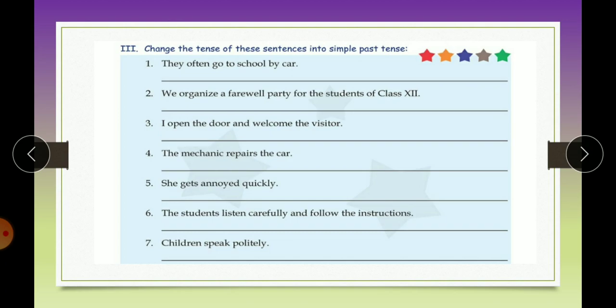Third exercise, change the tense of these sentences into simple past tense. So how are you supposed to do this? Very first step, read the sentence. Second step, find out the verb. Third, after finding the verb, change that verb into past tense - that is the second form of the verb. And then rewrite the sentence with that verb. Like, they often go to school by car. What is the verb in the sentence? Go. Go ka second form kya hota hai? Went. So they often went to school by car.